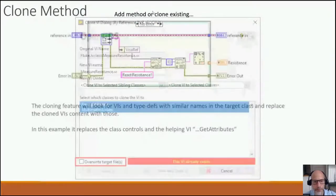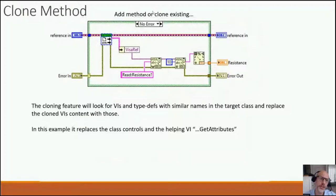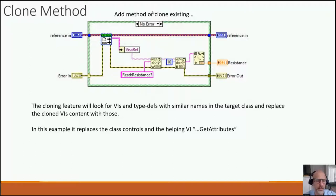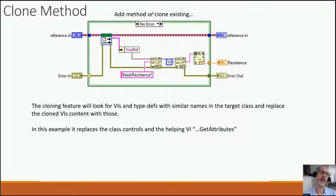The cloning feature looks for VIs and type defs with similar names in the target class and replaces the cloned VI content with those. In this example, cloning from Fluke to Keysight, it finds that class controls should be Keysight instead of Fluke, and replaces helper VIs like 'Get Attributes' with the Keysight version — so the code should be runnable right away.